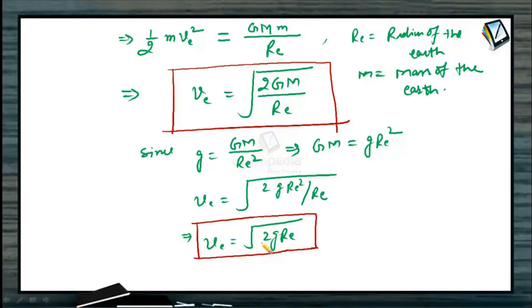So whether the body is of mass 1 kg, 10 kg or 50 kg, if it has provided a velocity V_E equals to root 2gR_E, it will escape the gravitational pull of the earth.